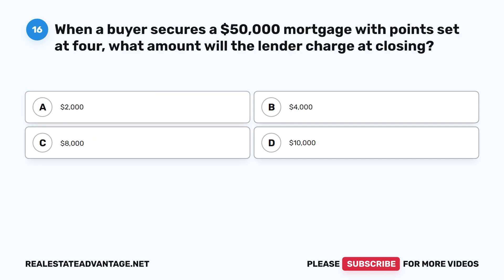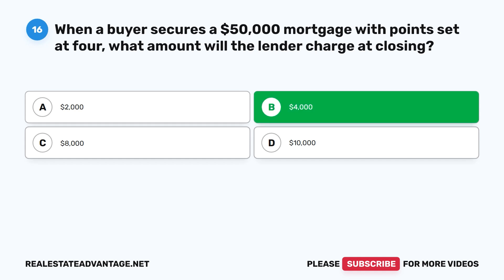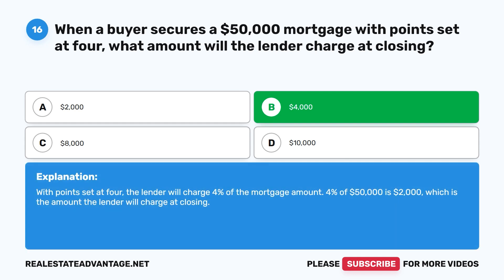Question 16: When a buyer secures a $50,000 mortgage with points set at 4, what amount will the lender charge at closing? A. $2,000. B. $4,000. C. $8,000. D. $10,000. The correct answer is B: $4,000. Wait — with points set at 4, the lender will charge 4% of the mortgage amount: 4% of $50,000 = $2,000. The lender charges $2,000 at closing.